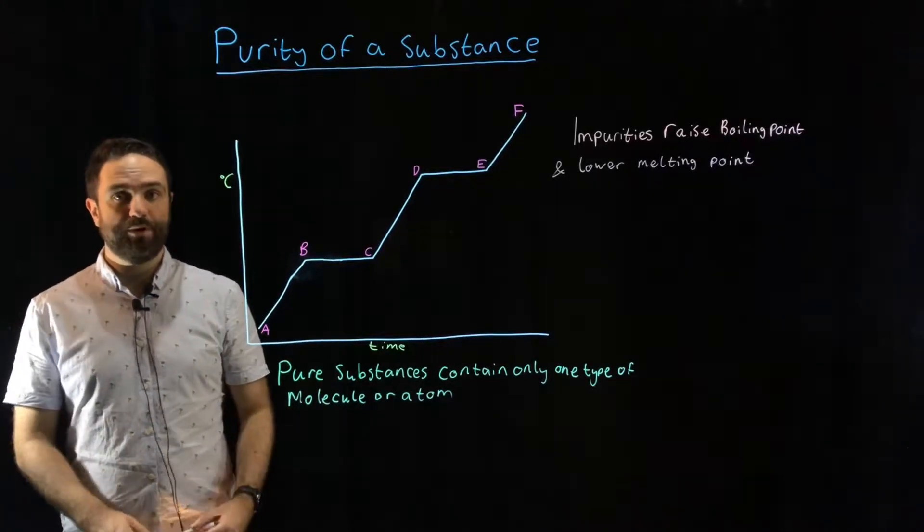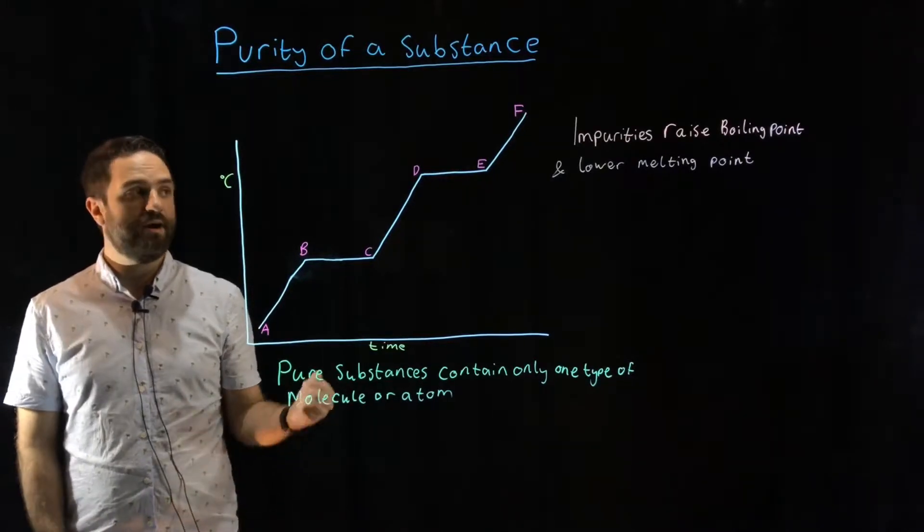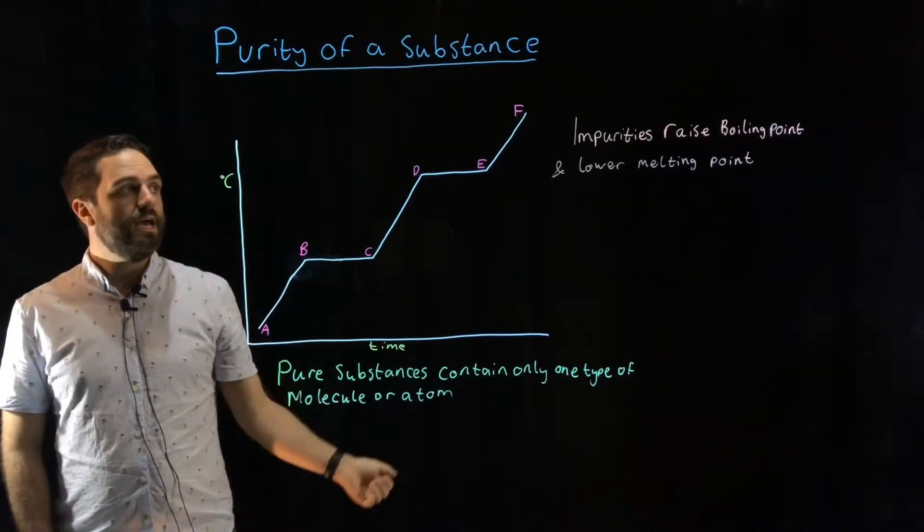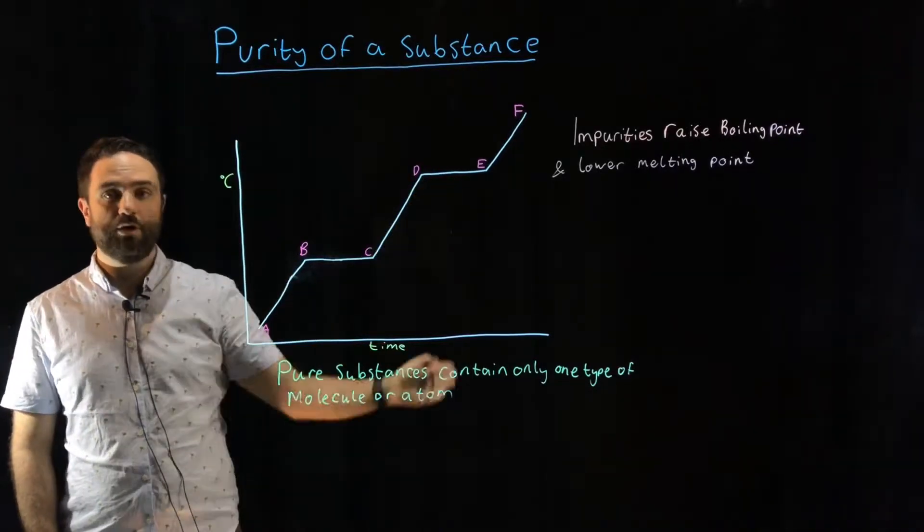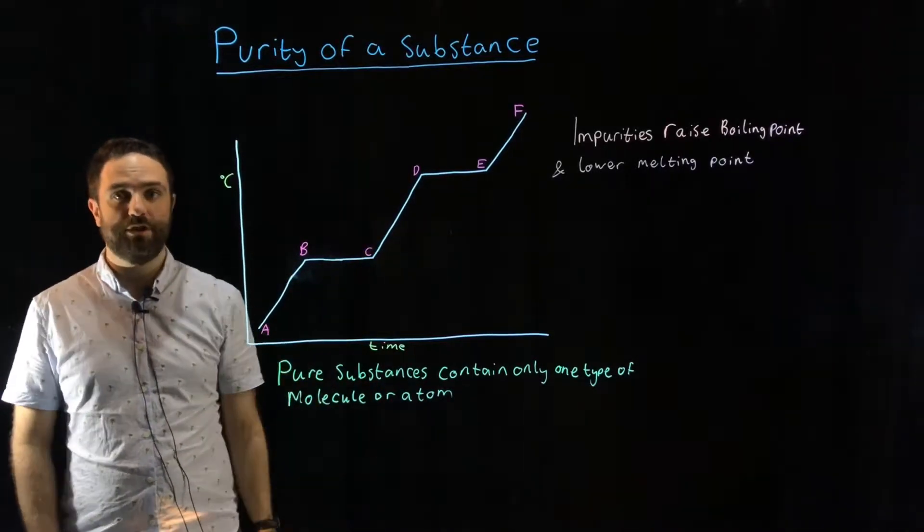If you have a pure substance, you end up with a graph that is shaped like this. If you have an impure substance, these lines here will not be nice sharp horizontal lines.